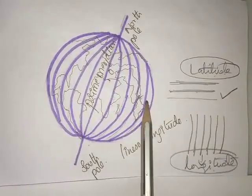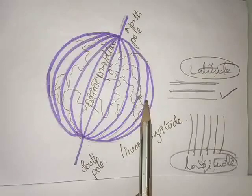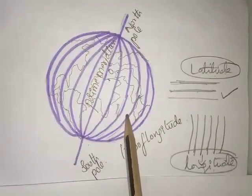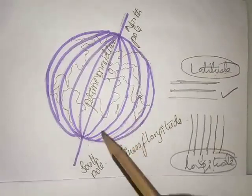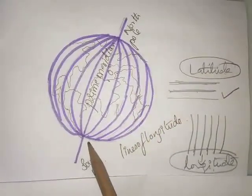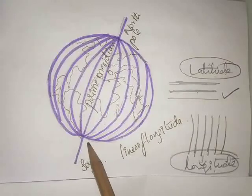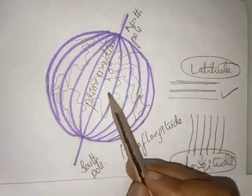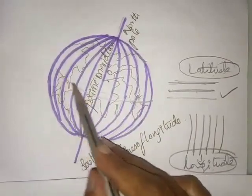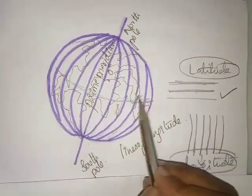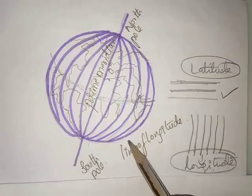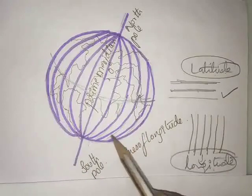The distance between any two longitudes — whether these two or the next two — will be equal in length. However, the distance between any two longitudes is less at the poles and increases as they pass towards the equator.